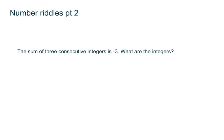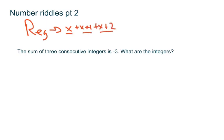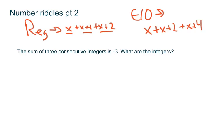Now let's look at some more number riddles — the sum of consecutive integers. We have two types. Regular consecutive integers use X, X plus 1, X plus 2. For even or odd consecutive integers, we use X, X plus 2, X plus 4, because the difference between consecutive even or odd integers is always 2. For example, 3, 5, 7 — you're jumping by 2 each time. Same with 4, 6, 8.